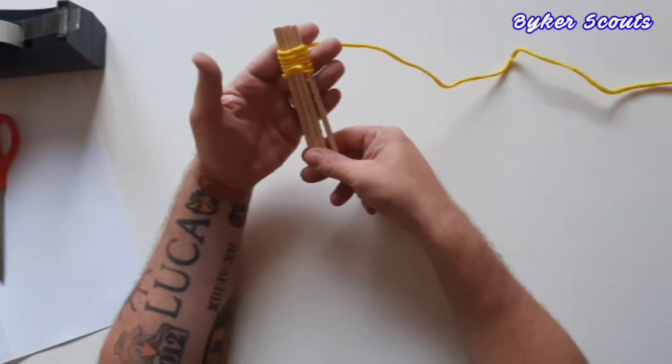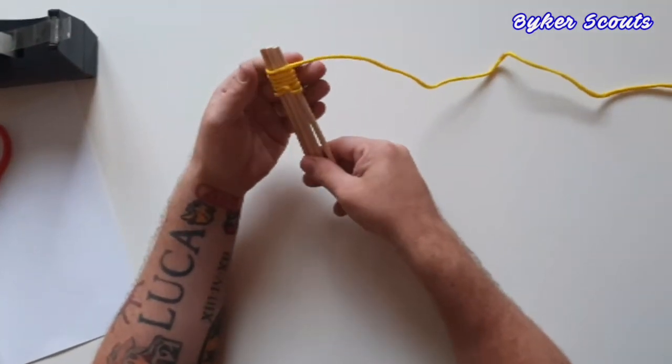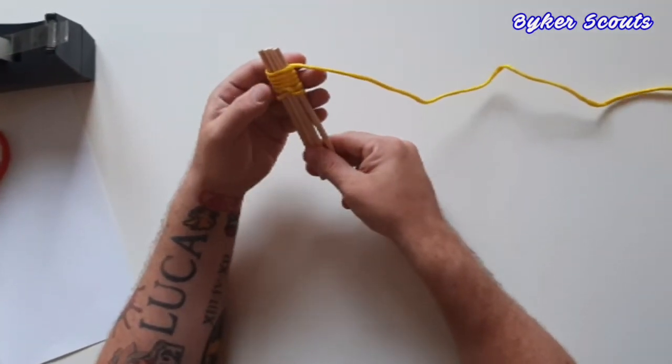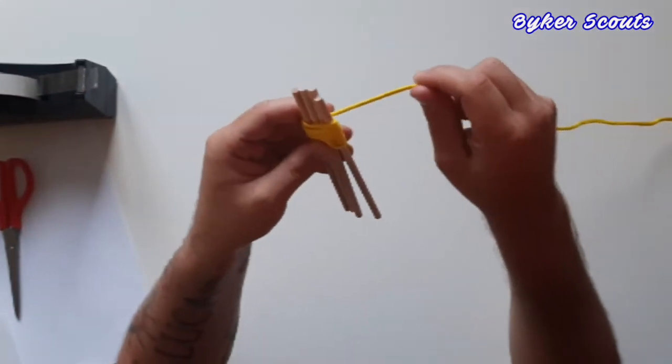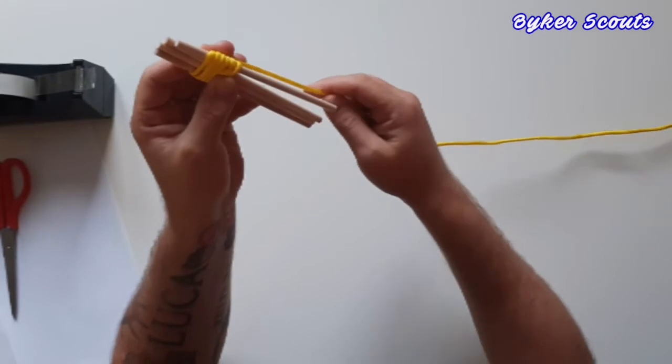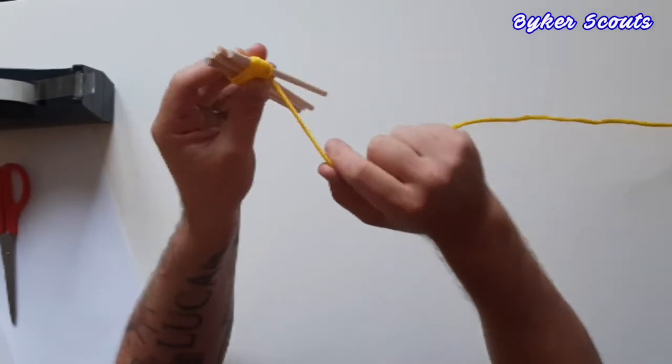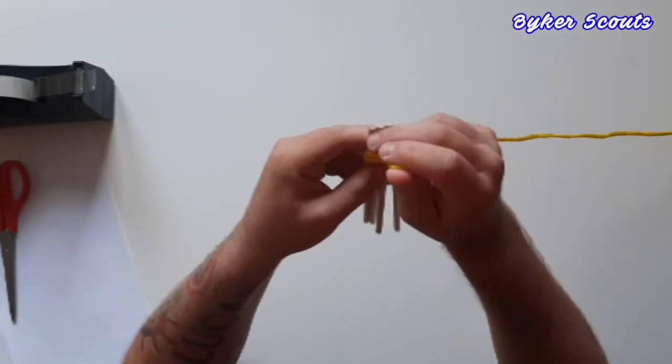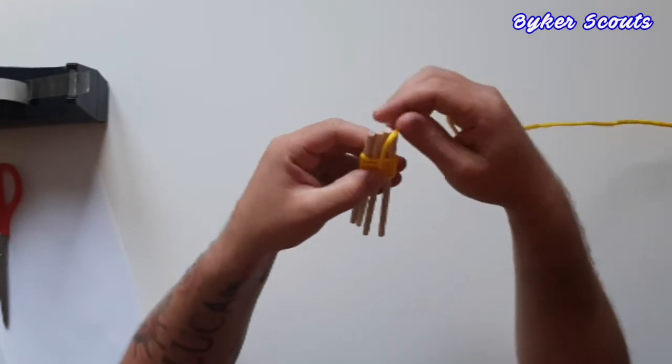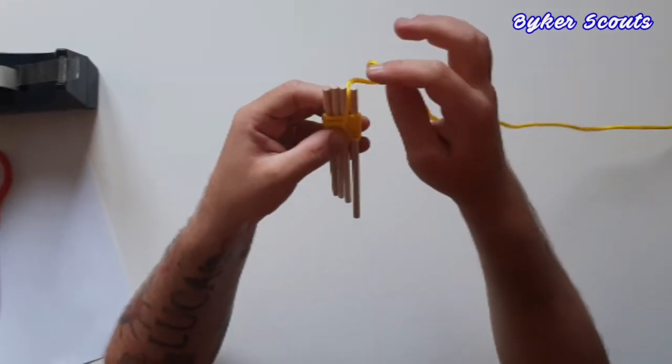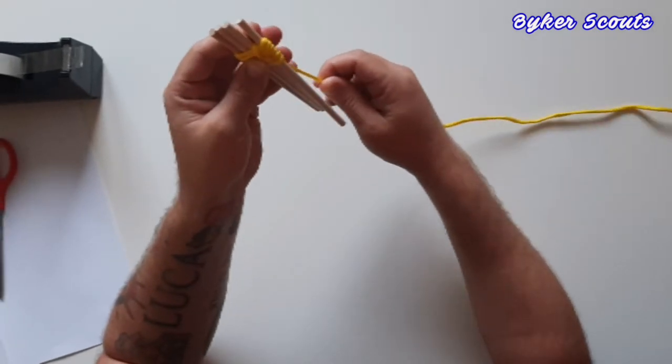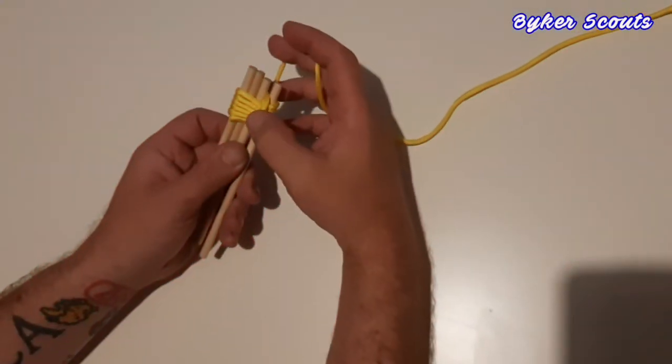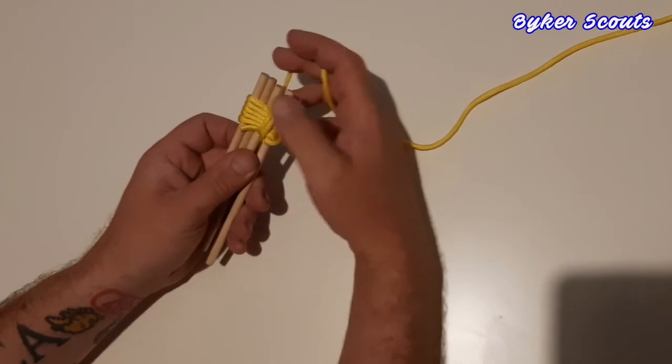You'll notice this type of lashing is similar to how you've done the tripod and sheer lashings. Next part, what you have to do is bring your paracord or string down between the first and second dowel and back up over all your strands and in between the first and second dowel again, back down, and do that at least twice. So once you've crossed over your lashings here twice.